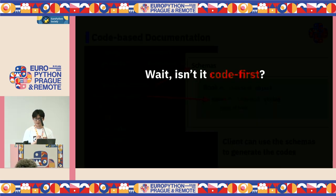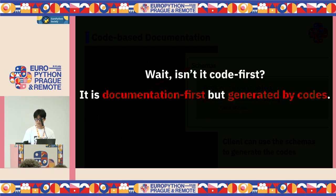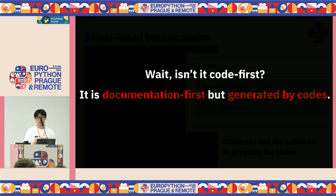You might think: isn't this code-first instead of documentation-first? But no, it is documentation-first, but generated by the codes. We don't implement any business logic or the details of the API — we just create the documents, the interface first. So this is still documentation-first development.